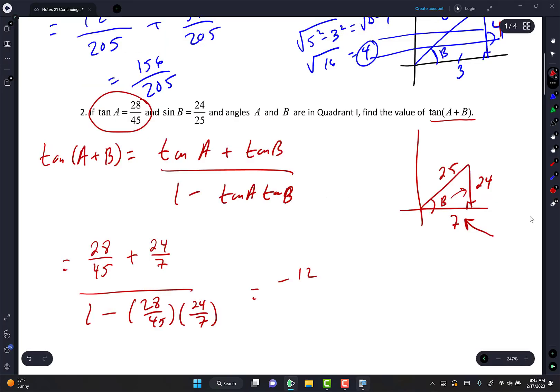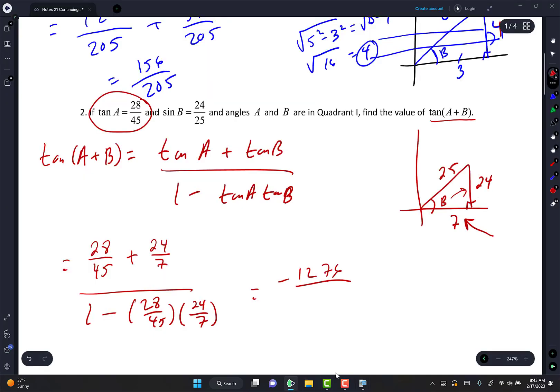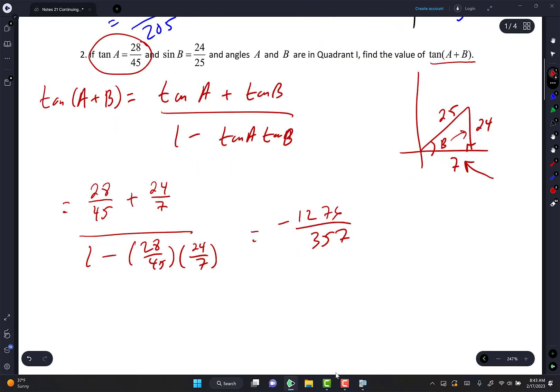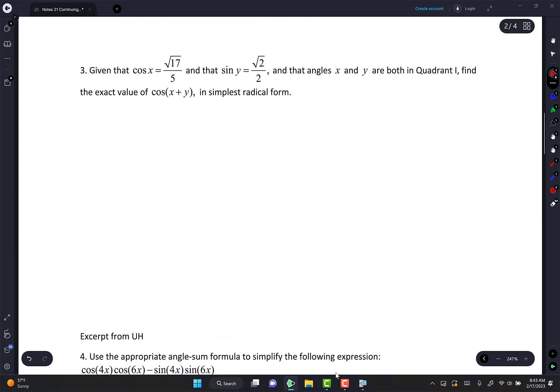Negative 1276 over 357. Can we do that? We can, right? Si se puede, folks. Si se puede. We can do it. Look at this one. I know they're all in quadrant one. Don't worry, we're going to change that in a little bit.